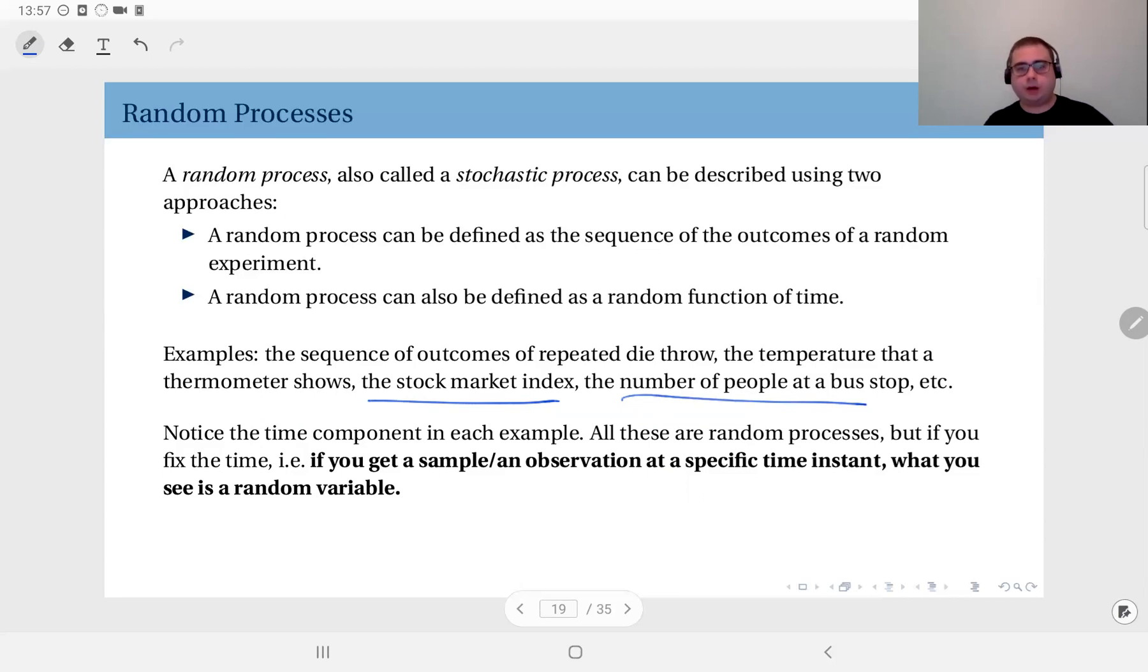So the relationship between the concept of random process and the concept of a random variable is crucial. Here, you have to observe the time component in each example. If you remove the time, if you just observe this random experiment at a specific time instant, it becomes a random variable. So we call these samples or observations. If you observe this random variable, the random process at a specific time instant, what you see is a random variable. So in that sense, this first approach becomes meaningful, a random process is a sequence of random variable observations. That's another way to look at.